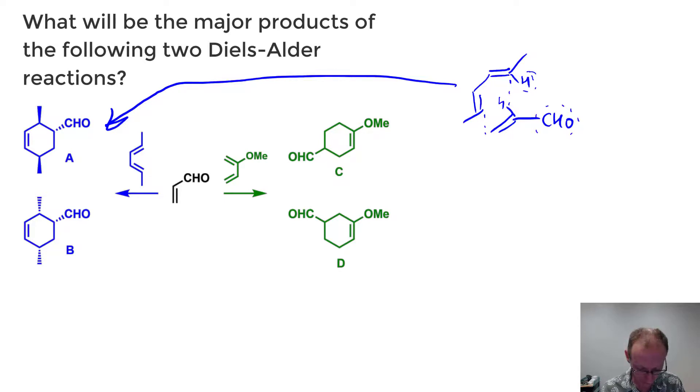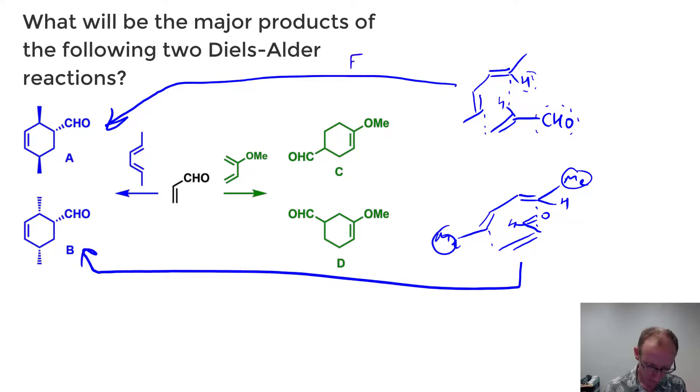Now the other possibility is that we have the diene like this again, but the aldehyde is tucked in underneath there like that, and it will end up on the same side as these methyl groups. So that will be leading to compound B. The first one that we looked at was the exo product, the second is the endo. The endo is going to be preferred, and so therefore we expect compound B to be the major product of this reaction.